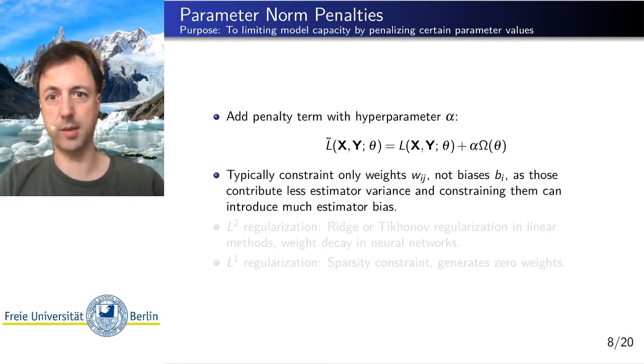And also important is here that if we have weights and biases, such as in neural networks, we usually only apply such penalty terms on the weights, not on the biases. Because the biases are really crucial for estimator bias. So there are two times bias in here. So what I mean is we do not restrict the value of the trainable biases, BI, because if we would do that, maybe we would have a huge bias of the estimator.